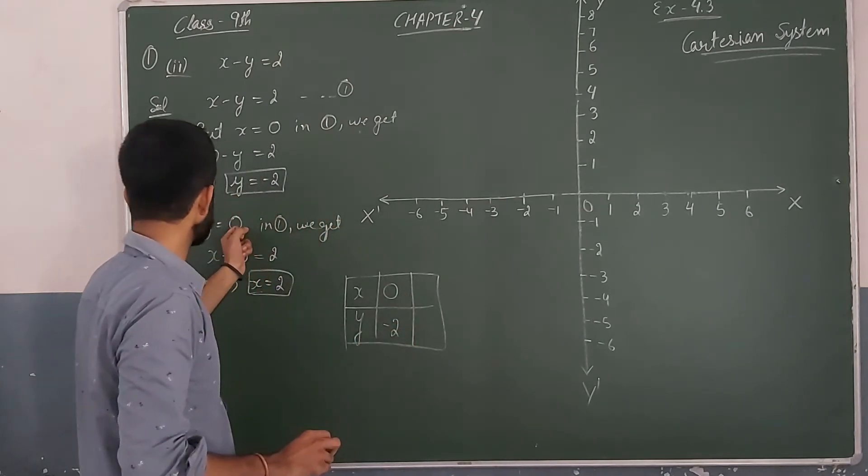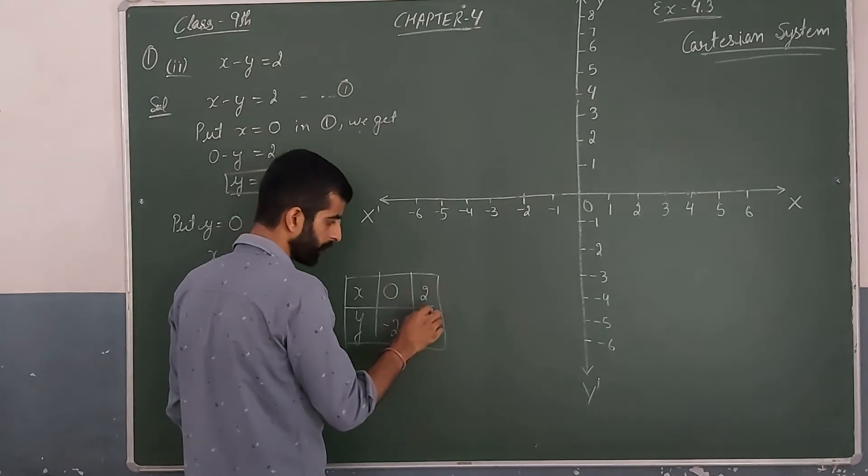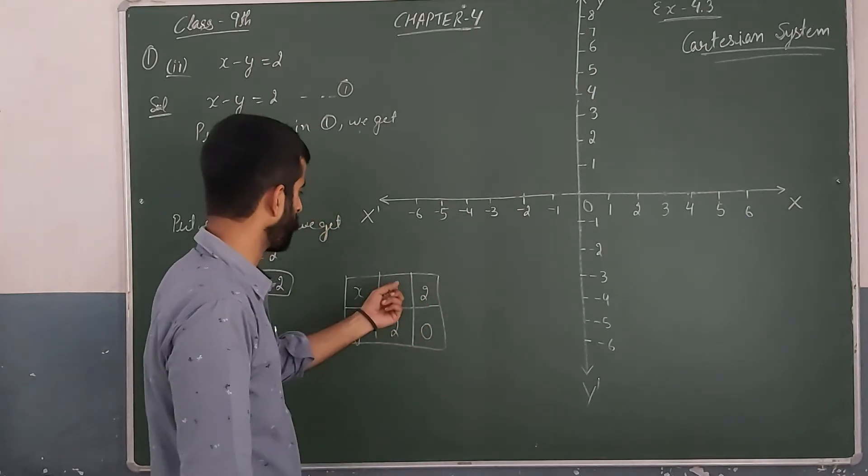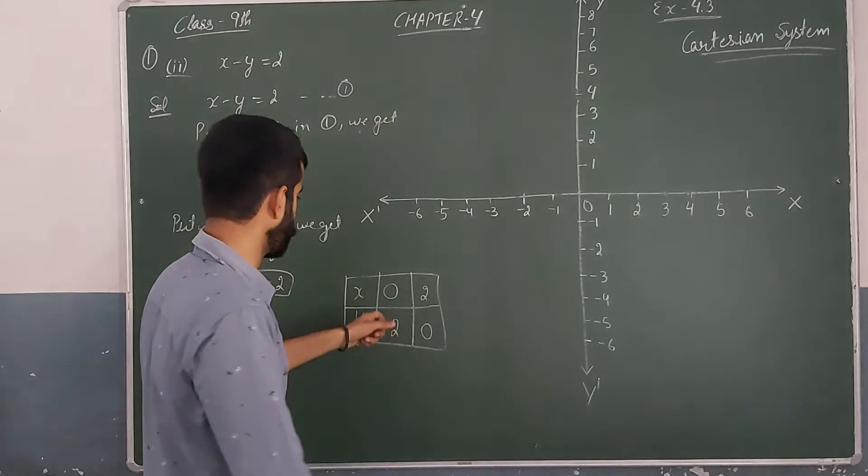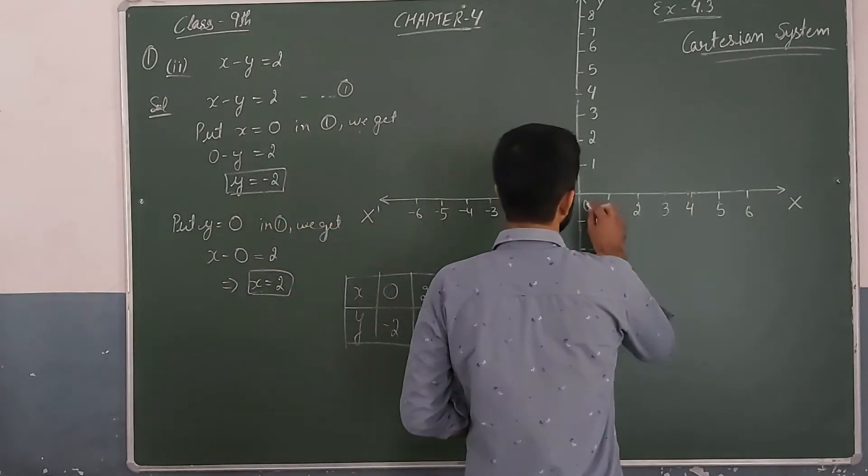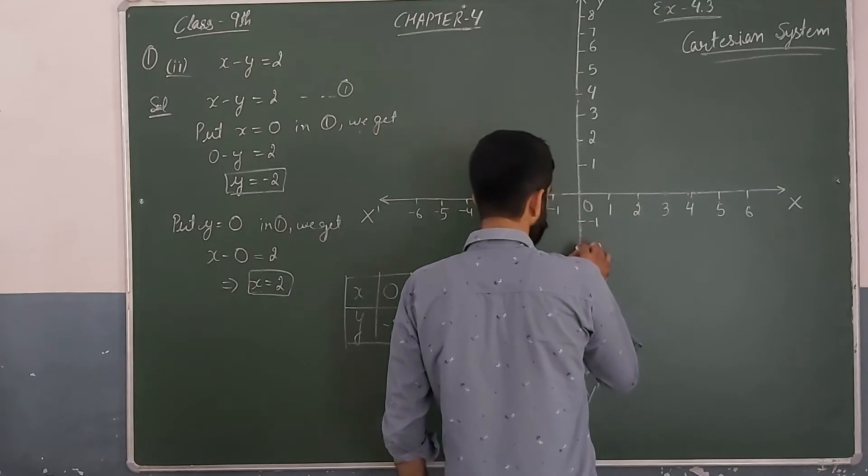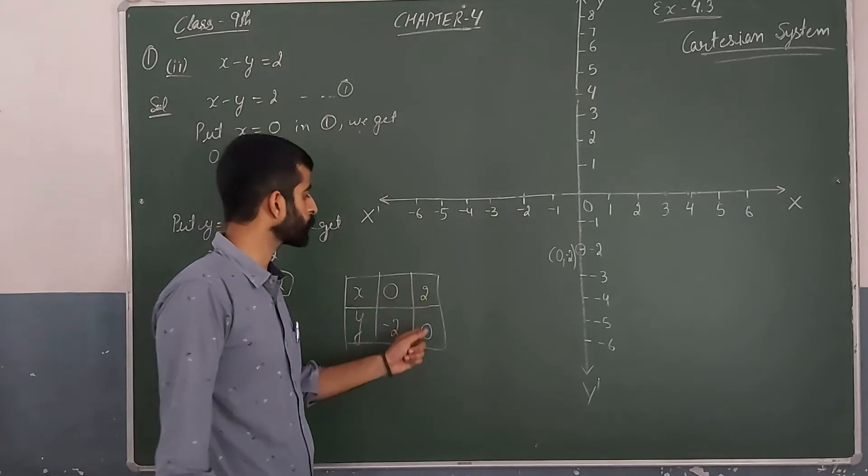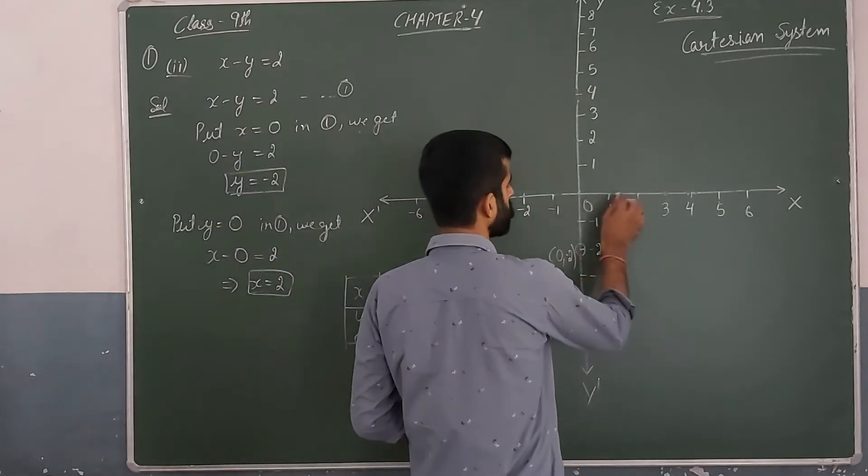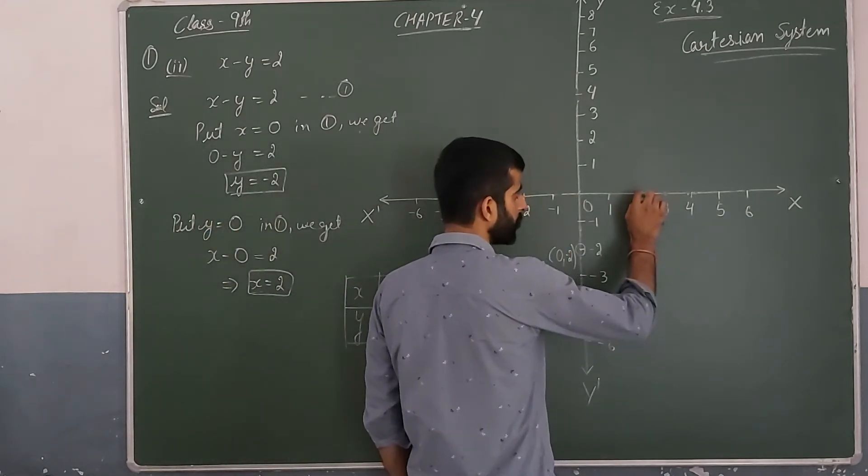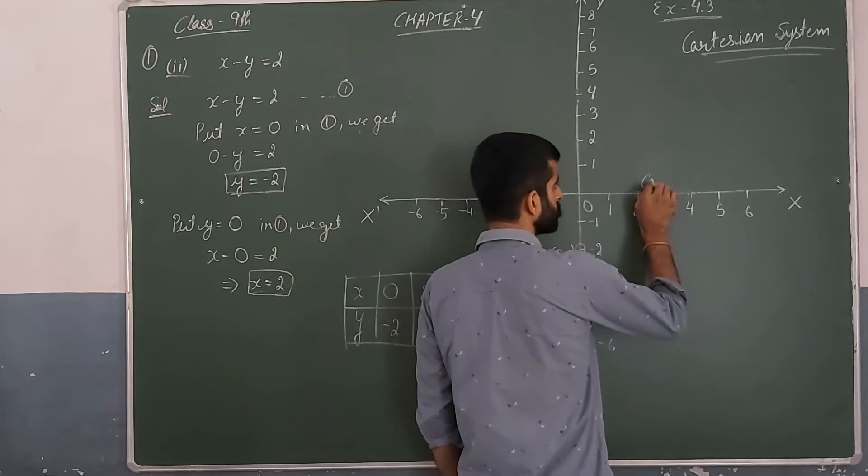So y is equal to 0, x is equal to 2. This gives us the point (2, 0) on the x-axis.